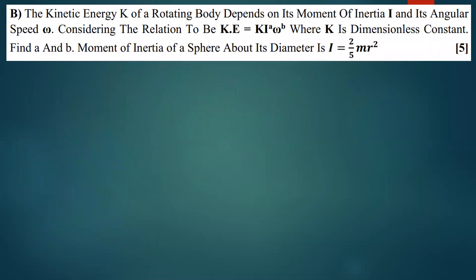The question says the kinetic energy of a rotating body depends on the moment of inertia and its angular speed omega. We've been told that the relation is KE equal to k times I to the power a times omega to the power b, where k is a dimensionless constant. We need to find a and b.